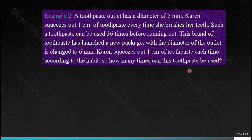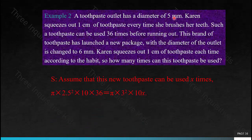A toothpaste outlet has a diameter of 5 millimeters. Karen squeezes out 1 centimeter of toothpaste every time she brushes her teeth, and such a toothpaste can be used 36 times. A new package has the diameter of the outlet changed to 6 millimeters. Karen still squeezes out 1 centimeter each time — so how many times can this toothpaste be used? Both toothpastes have the same volume. Let the new toothpaste be used x times. The equation is: π × 2.5² × 10 × 36 = π × 3² × 10x. This toothpaste can be used a total of 25 times.